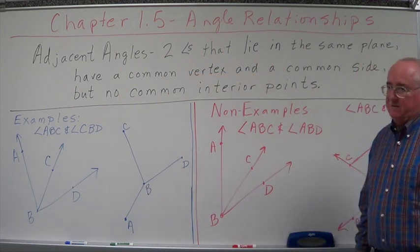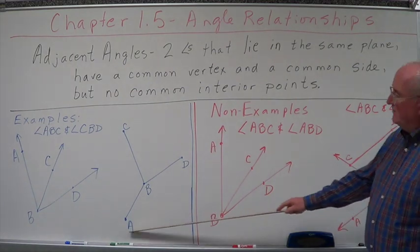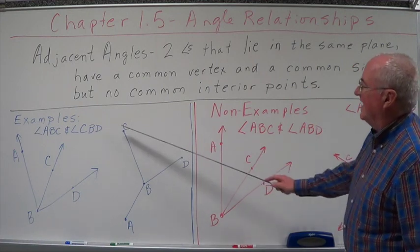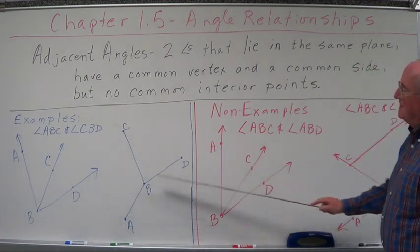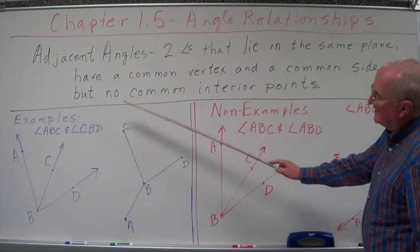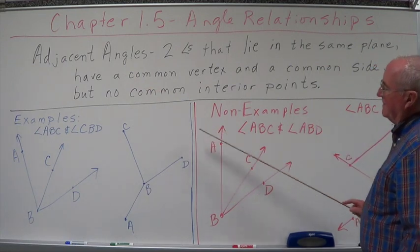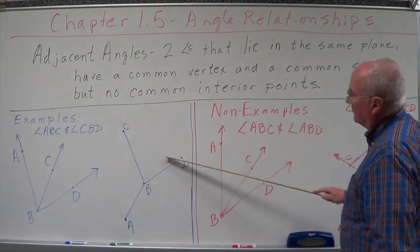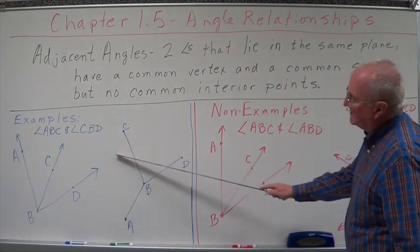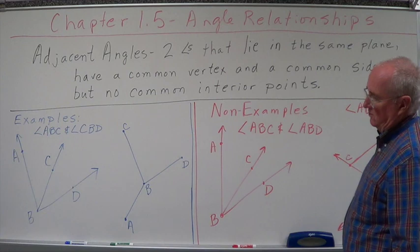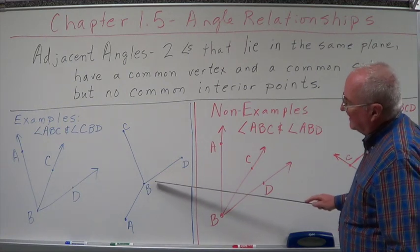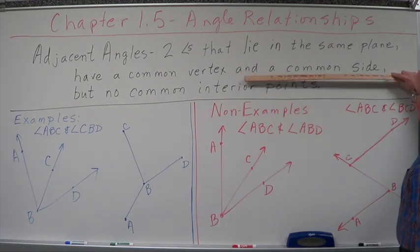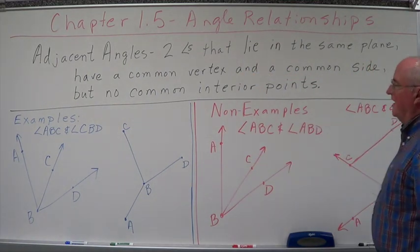Line segment BC. The sides of ABC are segment BA and segment BC. The sides of angle CBD are segment BC and segment BD. But they have no common interior points. There's nothing inside here that is the same as what's over here. Segment BC is the common side for both of them. Examples of.